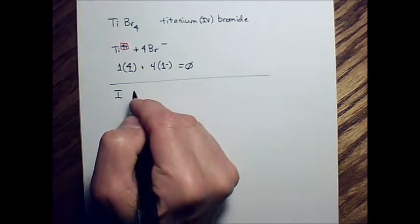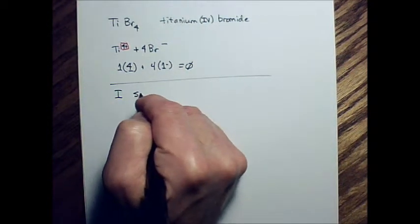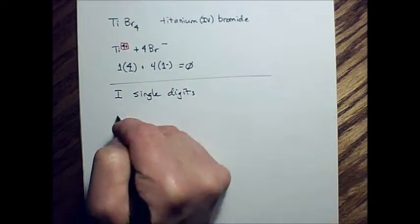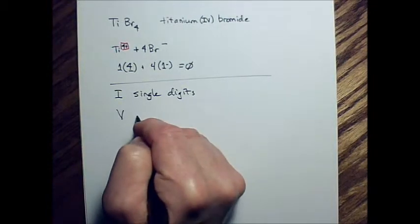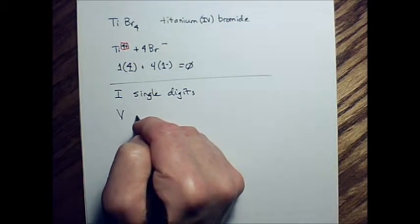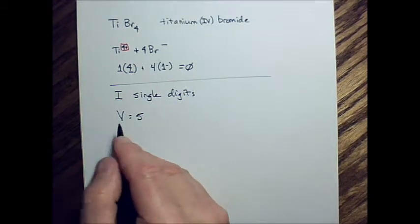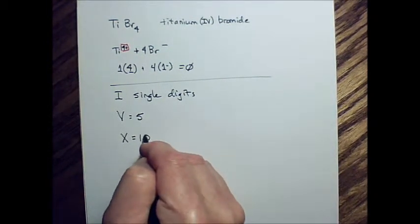So, I's are single digits. Okay, V is a 5. X is a 10.